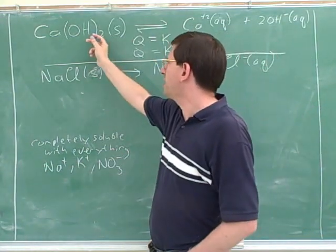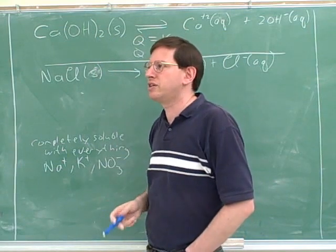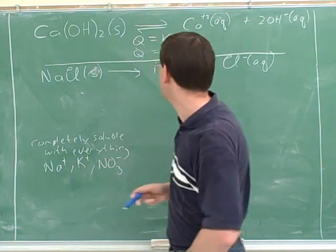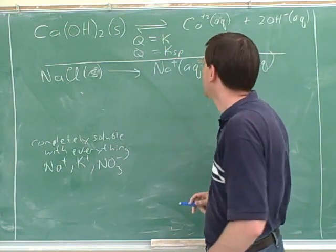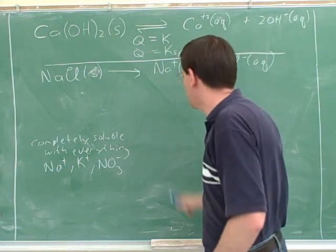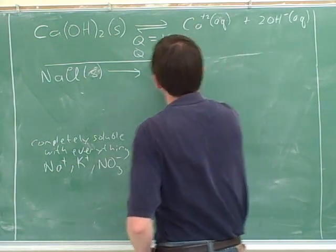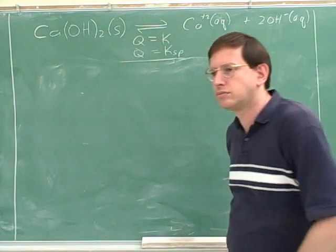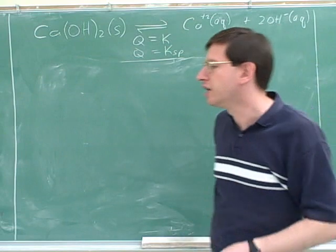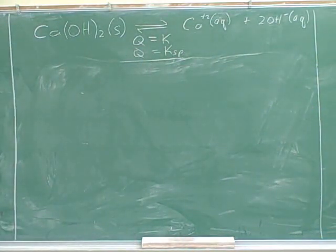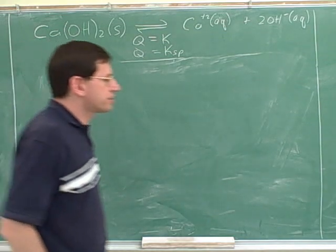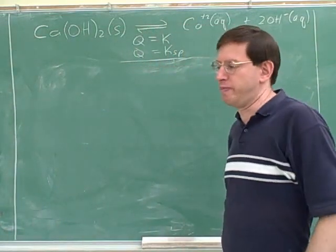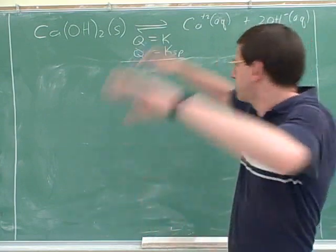Another name for these compounds is salts — a salt is essentially a synonym for an ionic compound. If they give you the Ksp, we know the salt is only slightly soluble and we'll need the equilibrium approach. Just as you can look up Ka and Kb values for acids and bases, you can look up the solubility product for many salts in tables, or the problem will give you the Ksp directly.